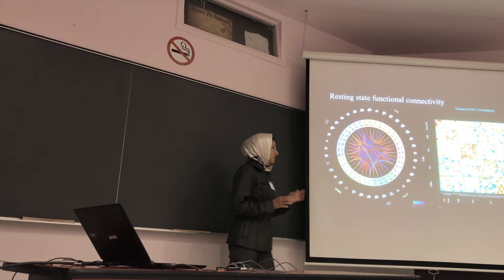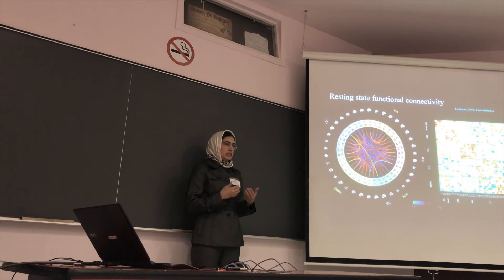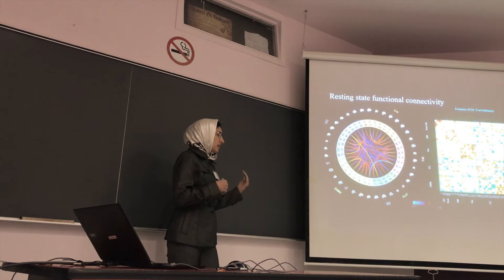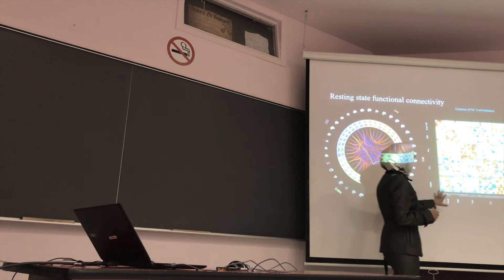After doing several preprocessing steps and then applying ICA, I ended up with 100 independent components, of which 39 were appropriately detected and labeled according to a brain atlas. You can see here the correlation map, which shows the functional network connectivity — the connectivity between different brain regions.